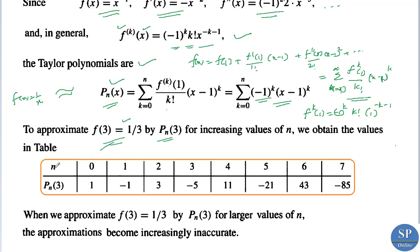Continuing: p_4(3) = 11, p_5(3) = −21, and so on. The actual value is f(3) = 1/3, but the approximations are 1, −1, 3, −5, 11, −21 — the approximation is a failure here. For larger values of n, the approximations become increasingly inaccurate.